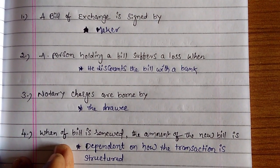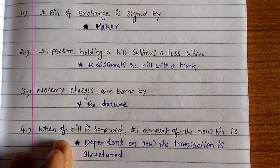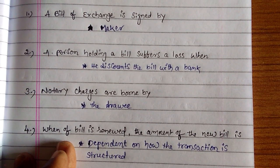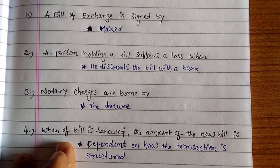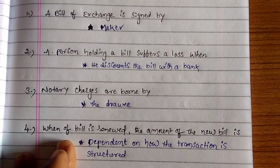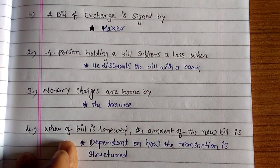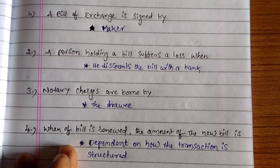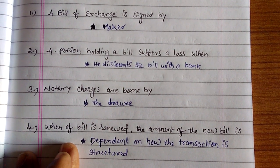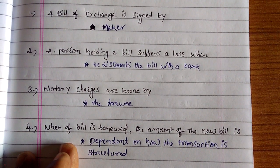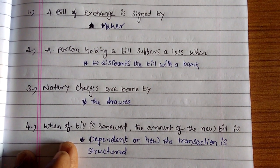Second one: a person holding a bill suffers a loss when he discounts the bill with a bank. The drawer discounted at bank, then has to pay a loss — he gets only the discounted amount, so he lost some amount.